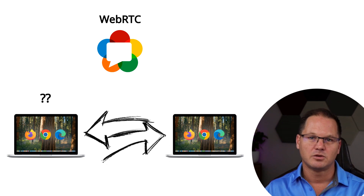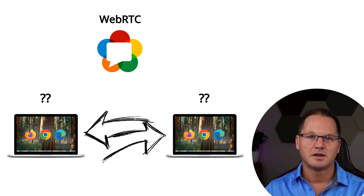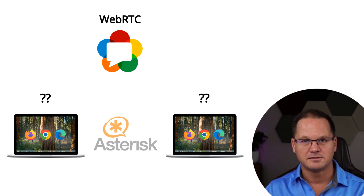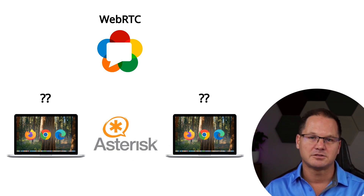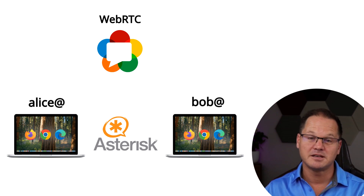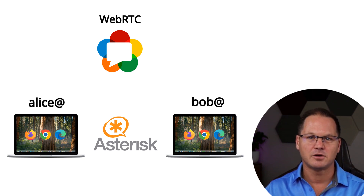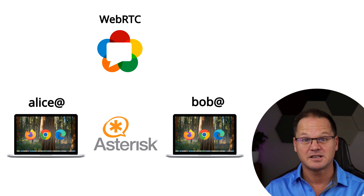The problem is, in order to get two browsers to communicate, you need to know how to reach each other. This is where a PBX or proxy can help. Asterisk, FreeSwitch, or any SIP-based PBX will already have the ability for one user to reach another, and most businesses already have some kind of PBX, either on-premise or in the cloud.